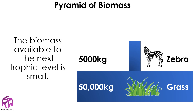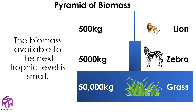If we have 5,000 kilograms of zebra, we will only have 500 kilograms of lion. This shows us how many organisms can be supported by the producer in a food chain. So 50,000 kilograms of grass can support roughly 14 zebra, while 14 zebra can support roughly 500 kilograms of lions, which is around three lions.